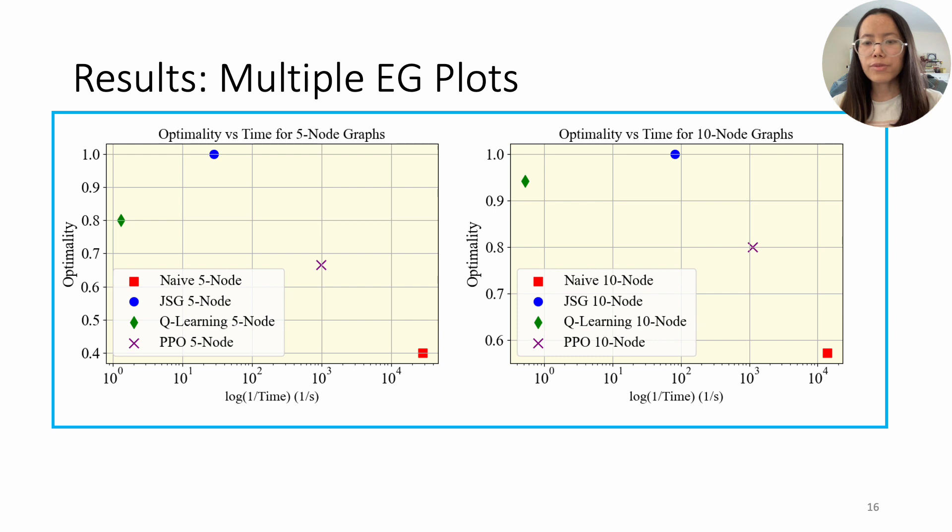For the multiple EG experiment on 5 and 10-node graphs, Q-Learning lacked scalability and was vulnerable compared to GSG, while PPO achieved 70 to 80% optimal solution with half the time of GSG.